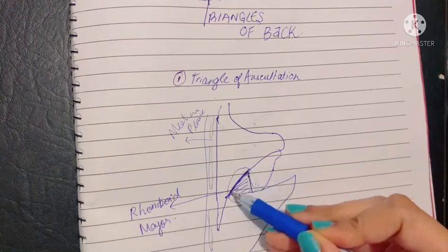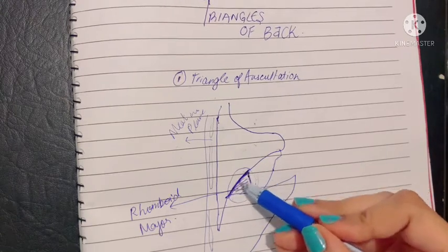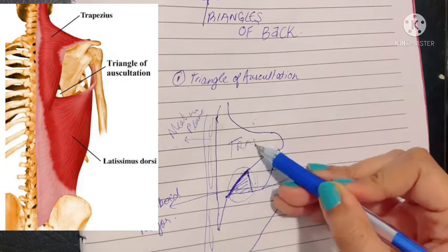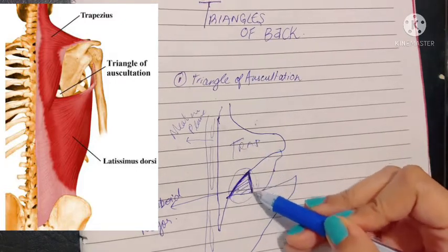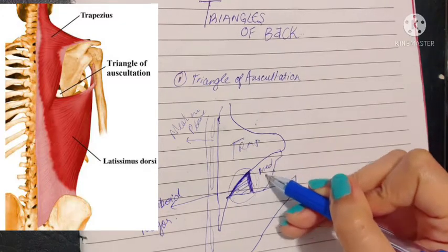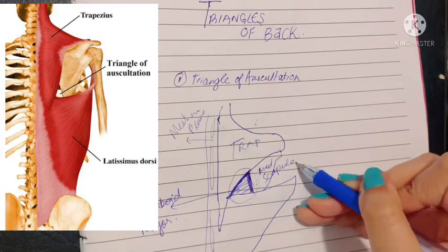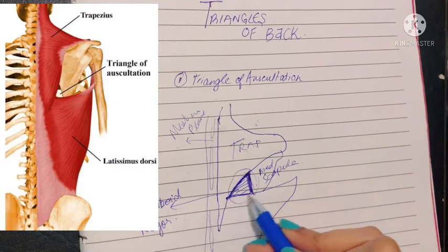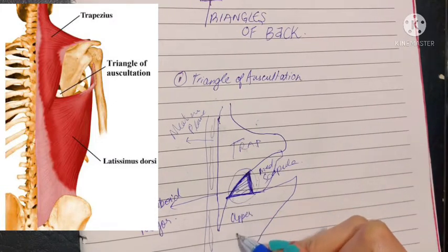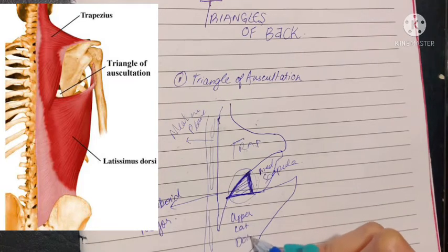The medial boundary of this triangle of auscultation is formed by the lateral border of the trapezius. The lateral border of this triangle is formed by the medial border of scapula. And finally the inferior border of this triangle is bounded by the upper border of the latissimus dorsi, the climber's muscle.